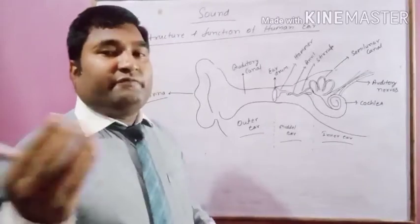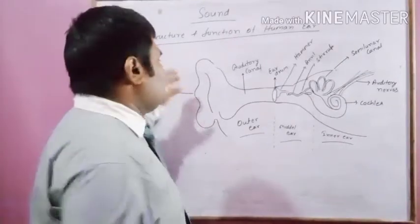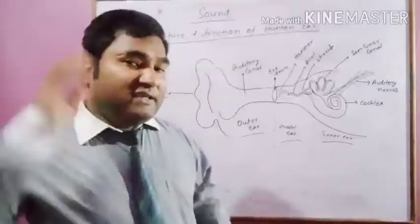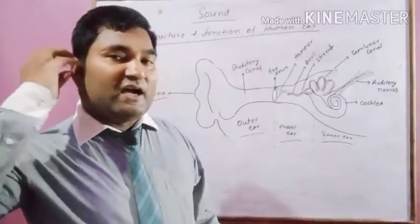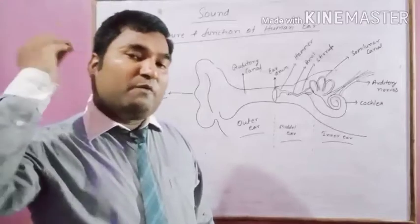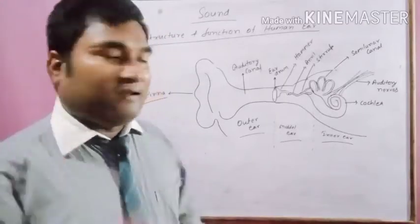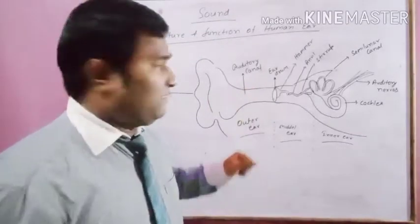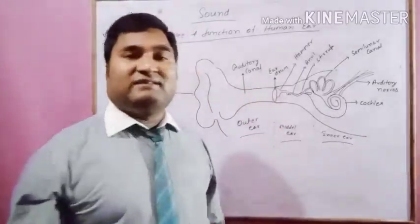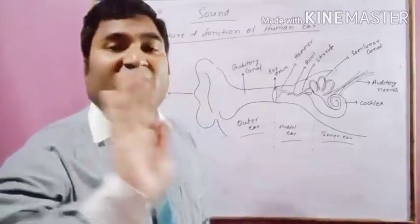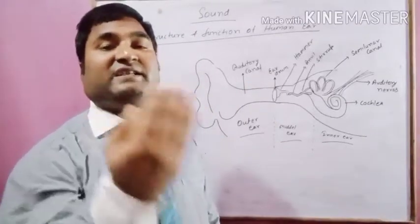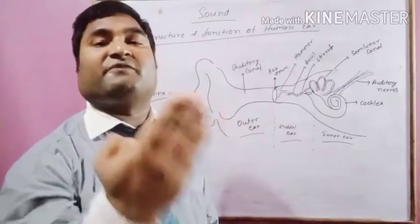When you hear some sound, sound comes in the form of wave and that wave is collected by the pinna and it transfers all the sound wave towards the ear canal. And when sound wave enters into the ear canal, when it strikes the eardrum, eardrum is pushed inwards due to this sound. This eardrum starts vibrating.